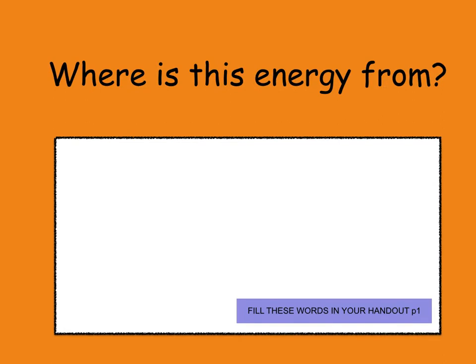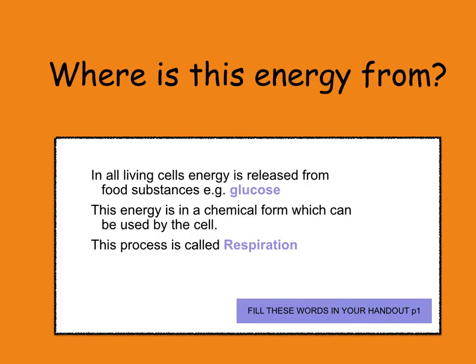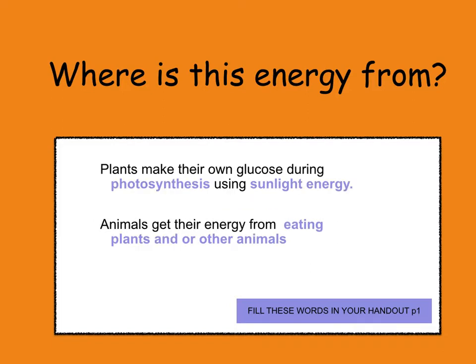So where is this energy from? In all living cells, energy is released from food substances, for example glucose, and this energy is in a chemical form which can be used by the cells — this process is called respiration. Plants make their own glucose during photosynthesis using sunlight energy, and animals get their energy from eating plants or other animals.